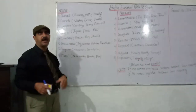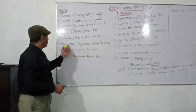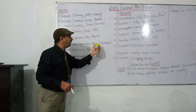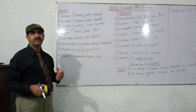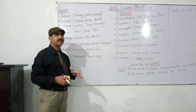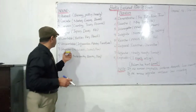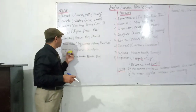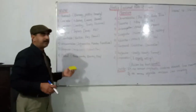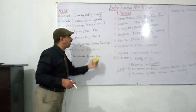Uncountable nouns cannot be counted — information, advice, furniture. Next are singular nouns like notebook, bird, pen; and plural nouns like notebooks, books, pens.